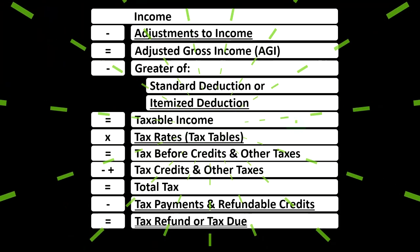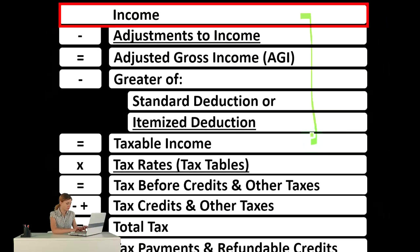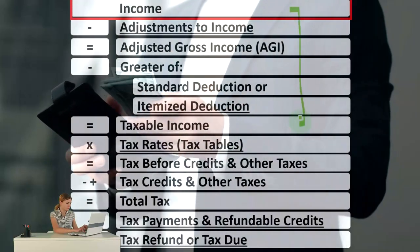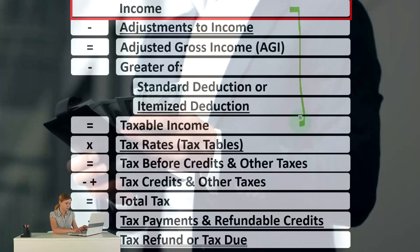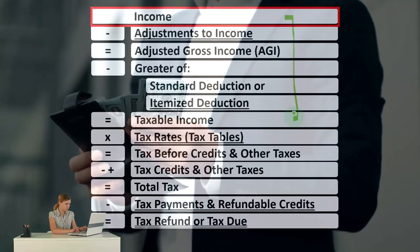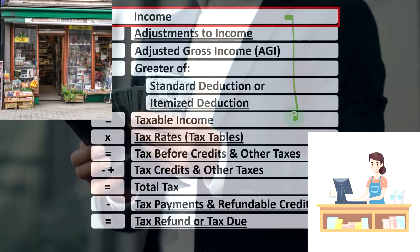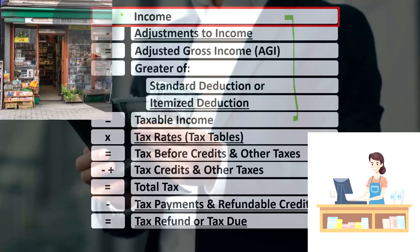Looking at the income tax formula, we're focused on line one — income. The first half of the income tax formula is in essence an income statement, just an outline. Other forms and schedules flow into these line items, one of those being Schedule C, which has business income minus business expenses. That business net income flows from Schedule C into line one, income, of the income tax formula.